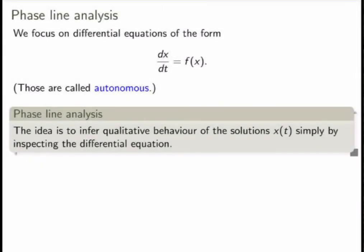Now let's study our second qualitative method, which is called phase line analysis. We're going to focus on a very special type of differential equations called autonomous equations, where the right-hand side only depends on x and there's no dependence on the variable t. As we've seen in class, there are many problems in physics and biology that can be modeled with equations of this form, so it's an interesting class to study.